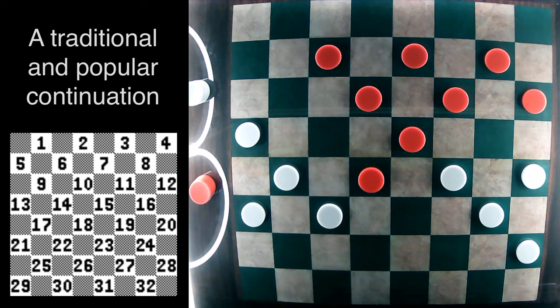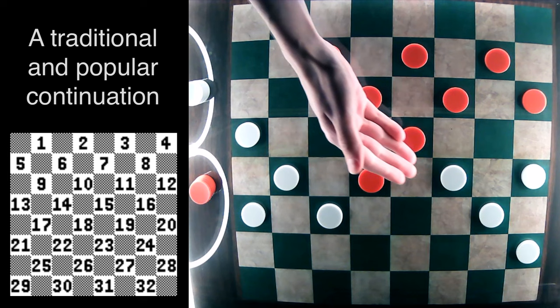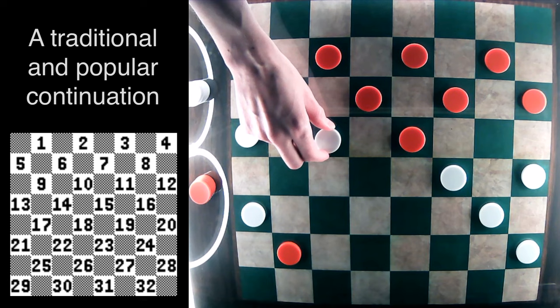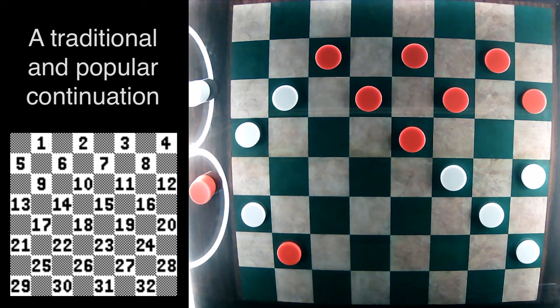And you may think, well, white looks to be in serious trouble. But white is going to attack this elbow here with 17-14. Red is going to take the single capture. And then white is going to attack the vulnerable piece on 6.